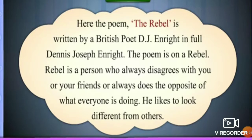The poem 'The Rebel' is written by a British poet, D.J. Enright — in full form, Dennis Joseph Enright. The poem is about a rebel, who is a person who always disagrees with you or your friends, or always does the opposite of what everyone is doing. He likes to look different from others.